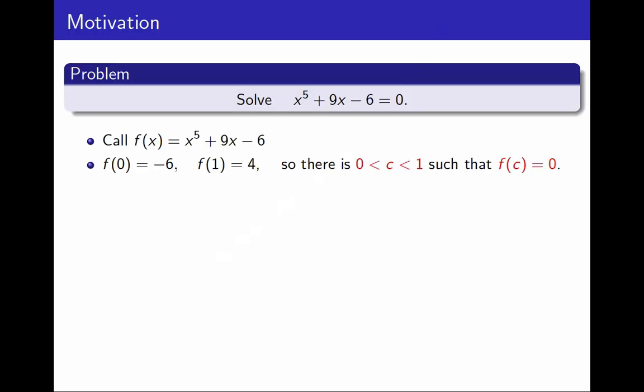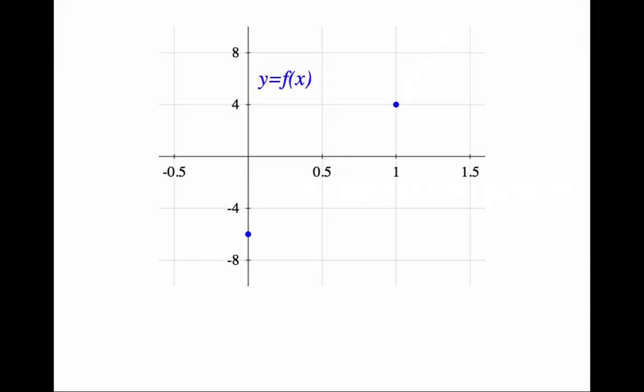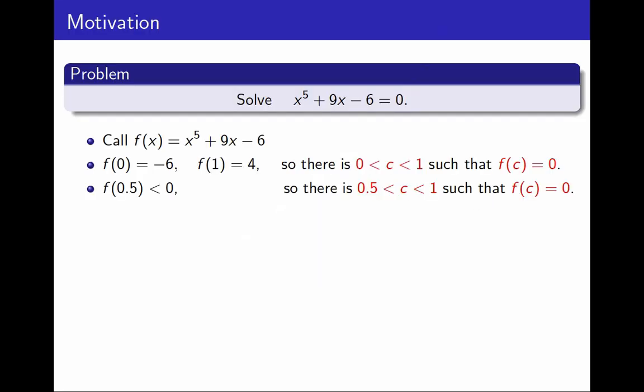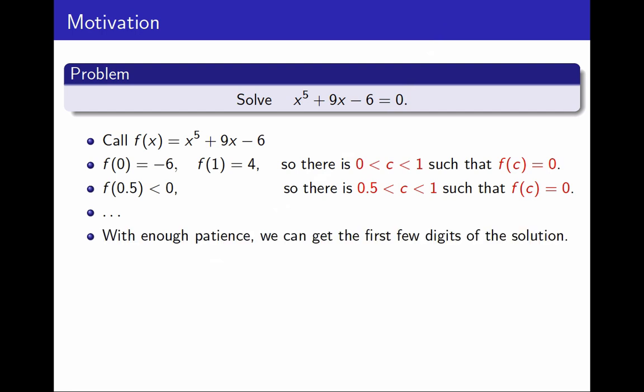So now I know there's a solution — the solution is 0-point-something. If I need more precision, I could keep going. I can evaluate the function at 0.5; I know this is negative. And therefore the solution must be between 0.5 and 1, because those were the two original points and there's a third point now — it has to cross the axis between 0.5 and 1. If I continue doing this with enough patience, I will end up getting the first few digits. If I need to know what the solution is, it's 0.65343 — with enough iterations, I'll get there.